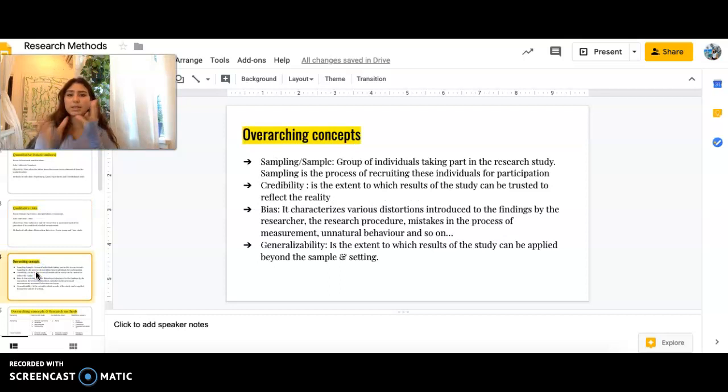Some overarching concepts. So you've got sampling slash sample. So this is a group of individuals taking part in the research study. And then sampling is the process of recruiting these individuals for the participation so that you can take these findings and generalize them to a larger population. So, if I was going to be doing a study on how Instagram affects teens, then I would be taking teens from different parts of this country and different age groups, different teens, so that I'm not just taking students from my school and then basing the evidence that I find on the entire population. I'd have to take a stratified sample so that I can generalize these findings to a greater population.